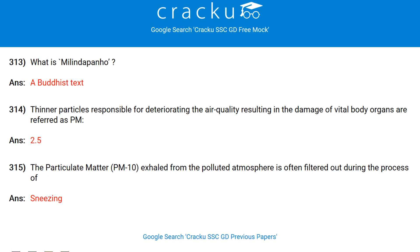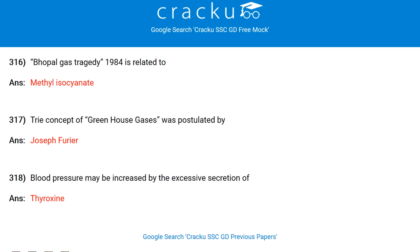The fat of a common mussel secretes a sticky glue that can be used to make heart implants. The unique chemical compound present in the glue is dihydroxyphenylalanine (DOPA). An example of a protein which acts as a hormone is oxytocin. When did Napoleonic France suffer its final defeat? Battle of Trafalgar. What is Milindapanha? A Buddhist text. Bhopal gas tragedy 1984 is related to methyl isocyanate.